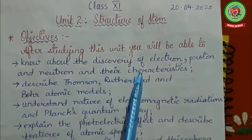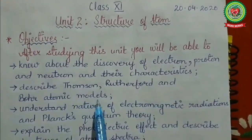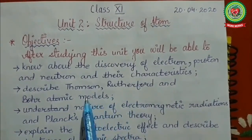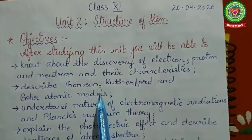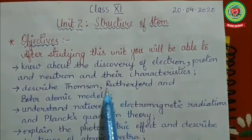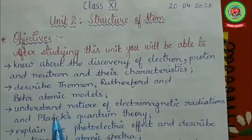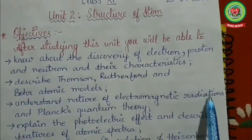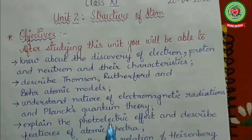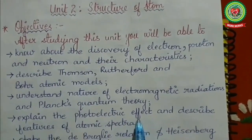We will describe Thomson, Rutherford, and Bohr atomic models. These models are basically how scientists helped us to know how electrons, protons, and neutrons are arranged in an atom. We will also be understanding the nature of electromagnetic radiations and Planck's quantum theory, and explain the photoelectric effect.